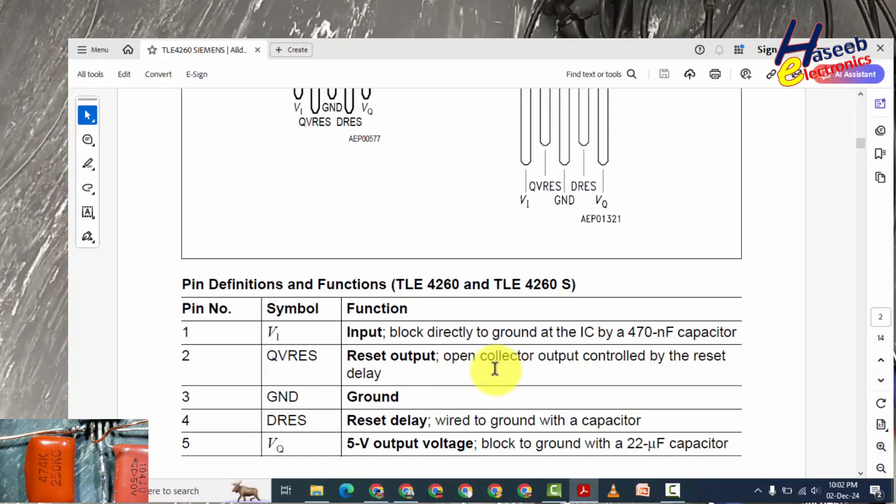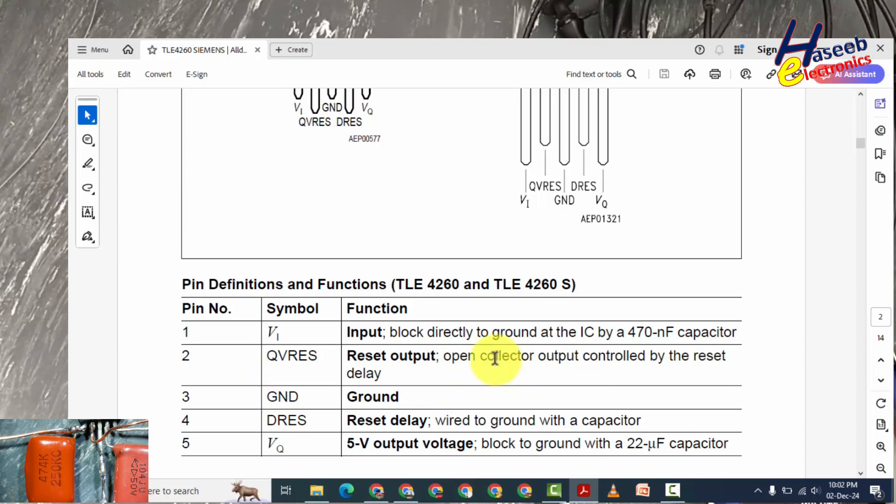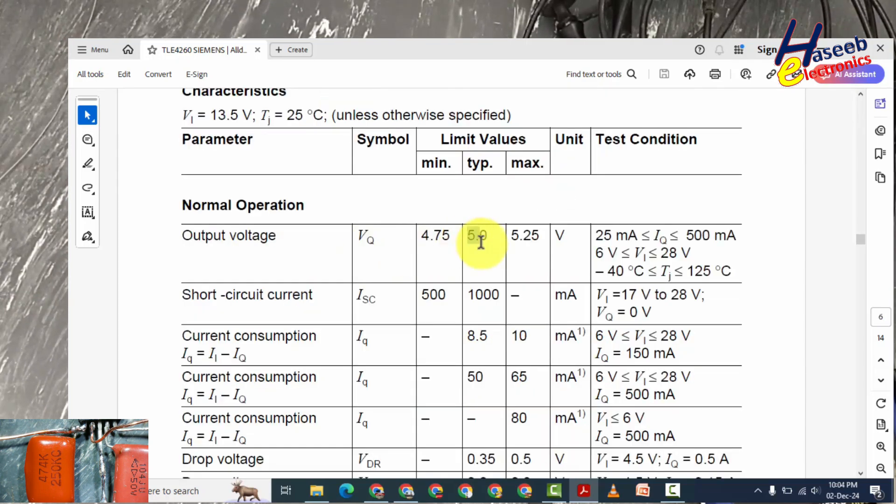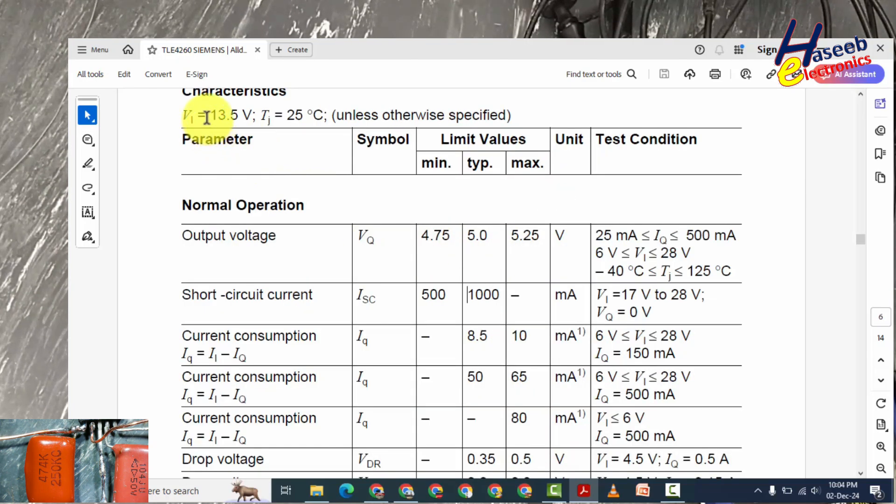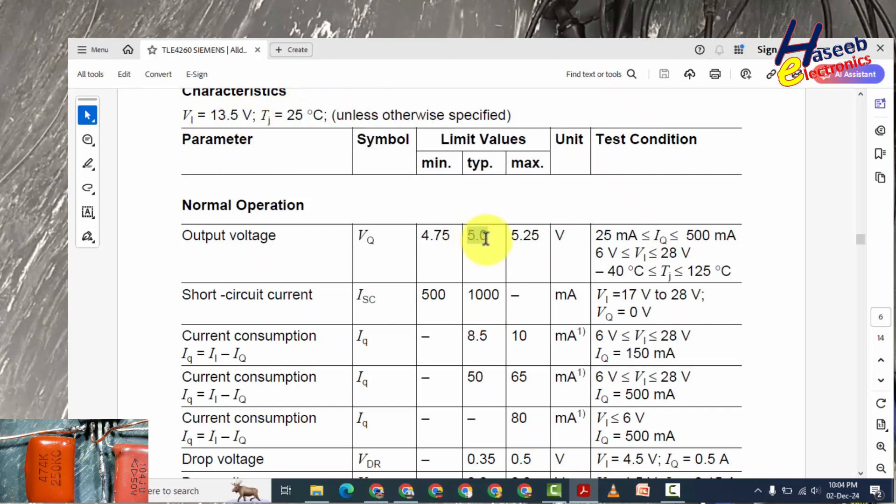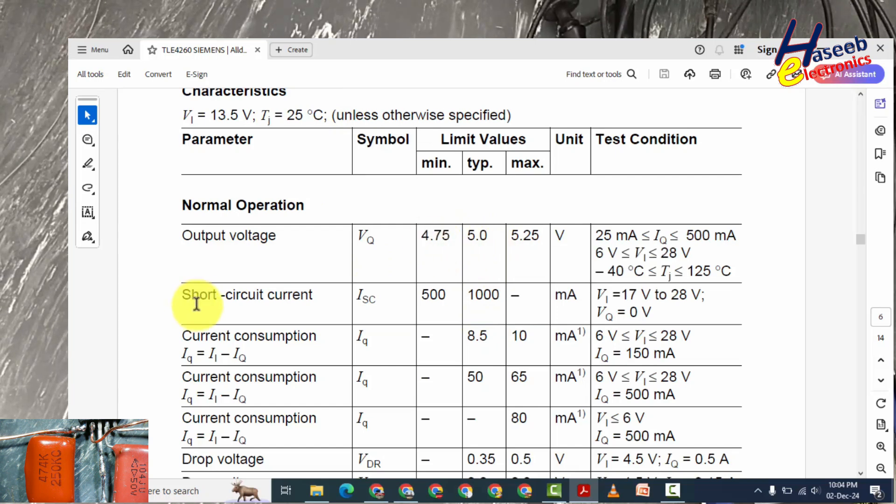Regulated output 5 volts when input voltage is 13.5 volts and temperature is ambient 25 degrees. Short circuit current: 1000 milliampere, 1 ampere - that is full current.